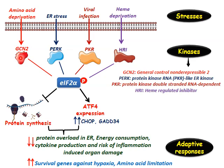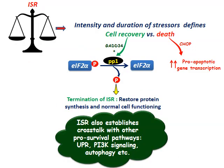This leads to adaptive responses like decreased protein overload in the endoplasmic reticulum, decreased energy consumption, decreased cytokine production, and decreased risk of inflammation-associated organ damage. Moreover, there is increased expression of survival genes against hypoxia and other limitations. Like other cellular stress responses, ISR also functions up to certain variable limits, and whether it leads to cell recovery or cell death is defined by the intensity and duration of the stressors.